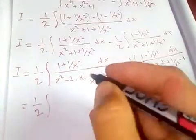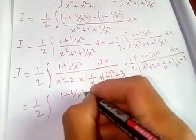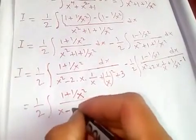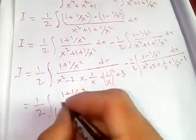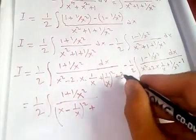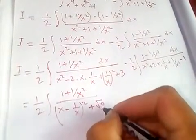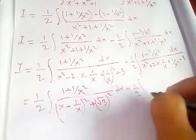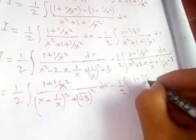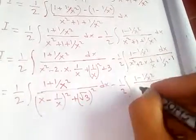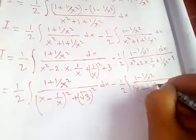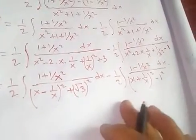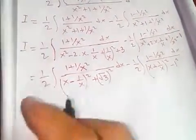Now we have half of the integral of (1 plus 1 over x squared) divided by (x minus 1/x) squared plus (root 3) squared, dx — minus half times the integral of (1 minus 1 over x squared) divided by (x plus 1/x) squared minus 1 squared, dx. Now we are going to use our substitution method.